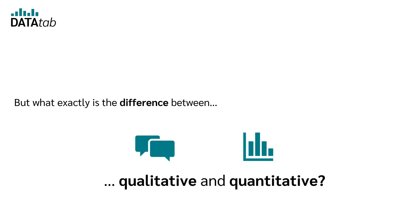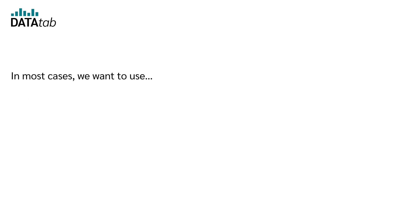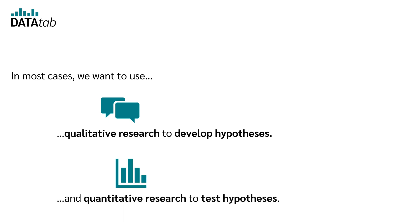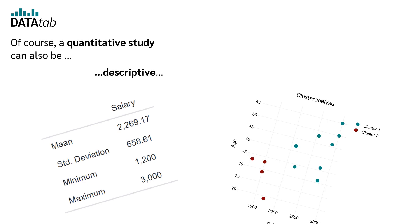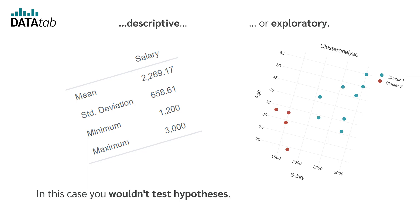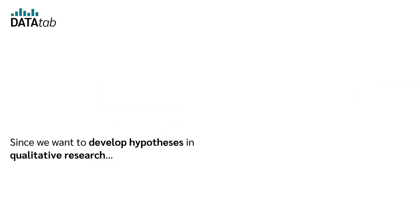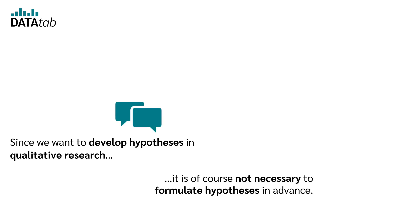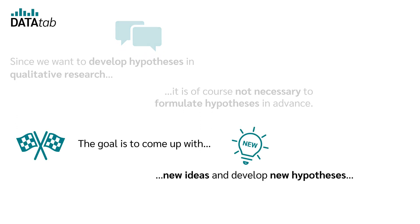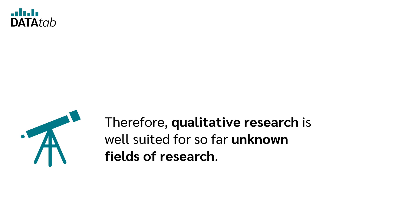What exactly is the difference between qualitative and quantitative? In most cases, qualitative research is used to develop hypotheses, and quantitative research is used to test hypotheses. Of course, a quantitative study can also be descriptive or exploratory — in that case, you would not test hypotheses. Since qualitative research aims to develop hypotheses, it is not necessary to formulate them in advance. The goal is to come up with new ideas and develop new hypotheses based on collected data. Therefore, qualitative research is well suited for previously unknown fields of research.